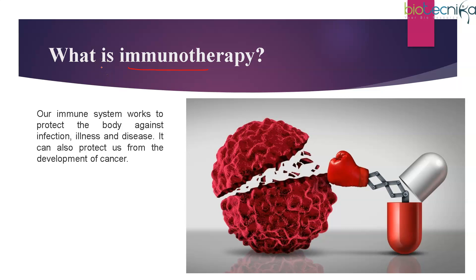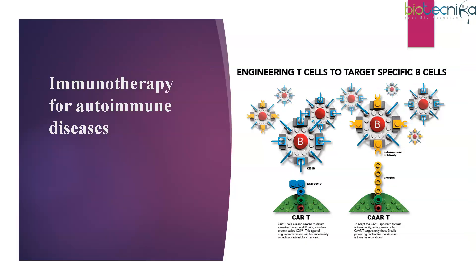The next topic is immunotherapy. The immune system has the ability to work and protect the body against any kind of infection, illness, or disease — it can even protect us from the development of cancer. Immunotherapy harnesses this ability. For autoimmune diseases specifically, you can engineer T cells to target specific B cells. There are two approaches: CAR-T and CART.